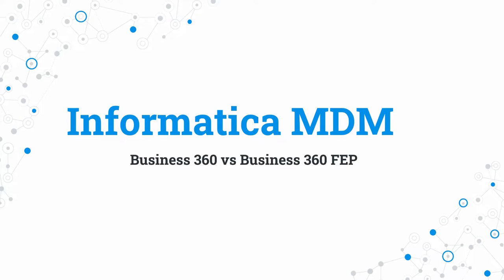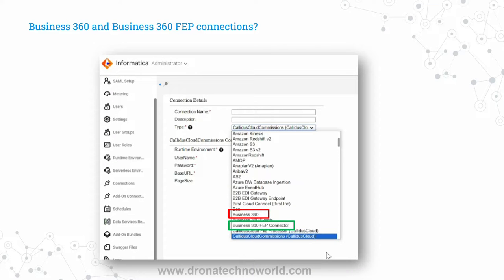Hello everyone, welcome back to today's tutorial on Informatica MDM SaaS. In today's tutorial we are going to understand the differences between Business 360 connector and Business 360 FAP connector. Whenever you create a connection in the Administrator tool of the IDMC, you might see there are two options available: Business 360 and Business 360 FAP connector. We'll look at the purposes of these two connectors and which connector to use when developing components in IDMC.